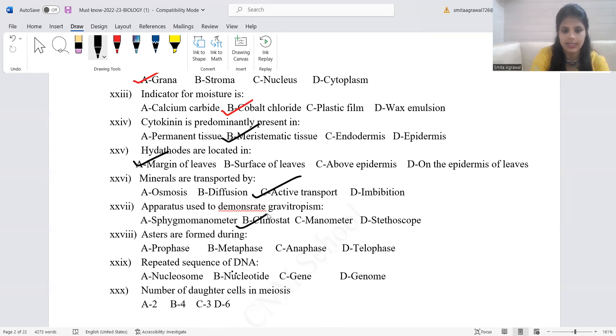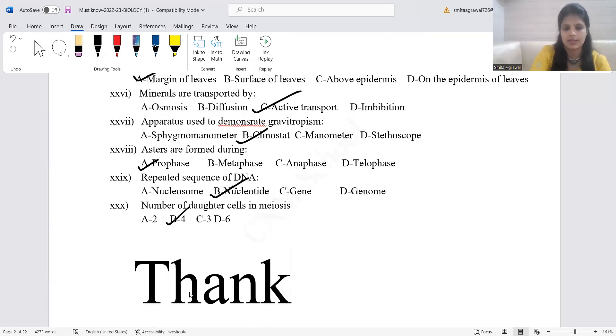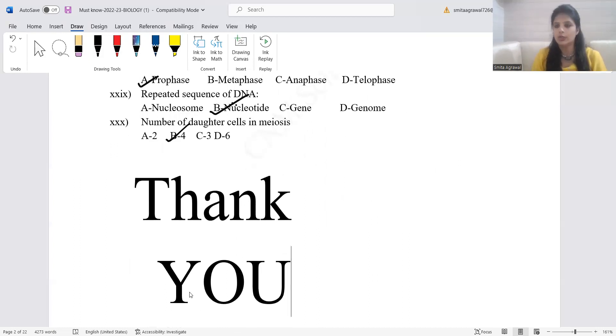Apparatus used to demonstrate gravitropism or geotropism, the correct answer is clinostat. Sphygmomanometer is for blood pressure. Manometer is for normal atmospheric pressure. Stethoscope is for heartbeat. Esters are formed during prophase. Repeated sequence of DNA is nucleotide. Number of daughter cells in meiosis are four. In mitosis the number of cells are two.